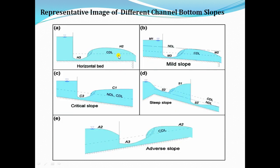In this diagram showing different channel slopes, we can see horizontal slope channel, mild slope channel, critical slope channel, steep slope channel, and adverse slope channel. The different types of surface profiles occurring on the respective channel slopes are designated accordingly: H curves for horizontal slope, M curves for mild slope, C curves for critical slope, S curves for steep slope, and A curves for adverse slope channels.